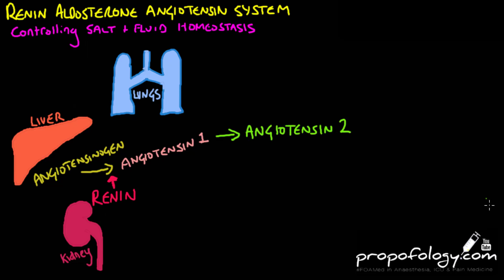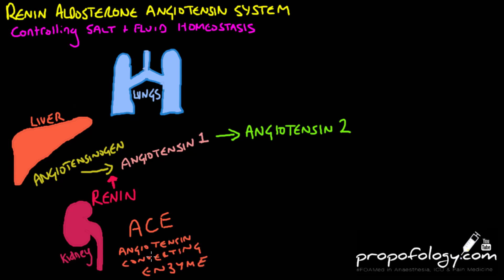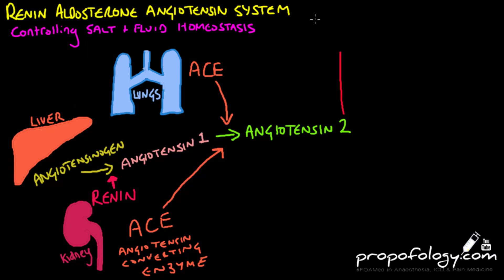Angiotensin 1 is then acted on by angiotensin converting enzyme, which is produced by the surface epithelium of the lungs and the surface epithelium of the kidneys. This angiotensin converting enzyme converts angiotensin 1 to angiotensin 2, and this is where the interesting effects begin.